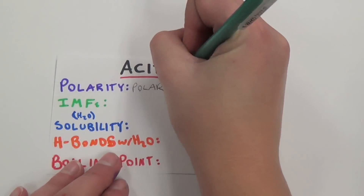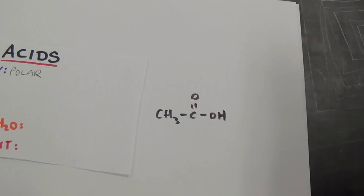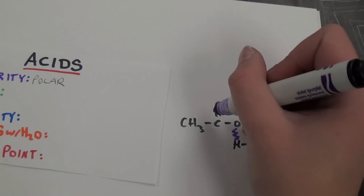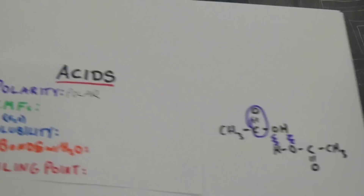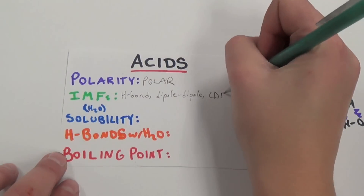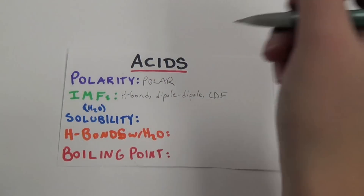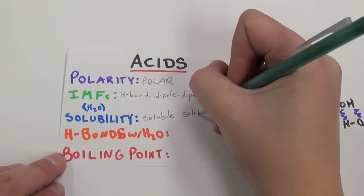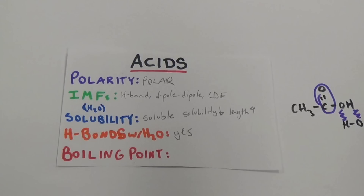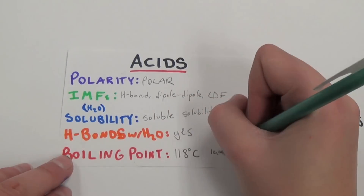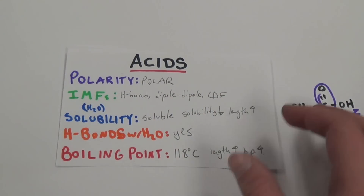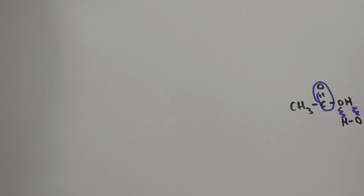Succeeding alcohols, we have carboxylic acids. Acids are able to hydrogen bond to themselves due to their oxygen-hydrogen bond and have increased polarity compared to alcohols due to their reactive carbon-oxygen double bond. They are completely soluble in water and are able to form hydrogen bonds with water. As chain length increases, solubility decreases. They have a boiling point of about 118 degrees Celsius.